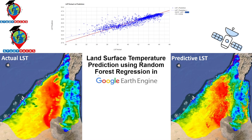Hello everyone, welcome to the Study Hacks Institute of GIS and Advancing. Today I will try to discuss a very important topic — mainly how we can use random forest regression to make land use land surface temperature (LST) prediction using random forest regression in Google Earth Engine. I will try to explain all of these things step by step. I hope after completing this tutorial you are able to do any types of random forest regression for any other model.